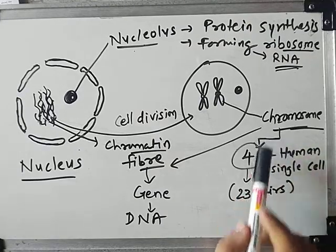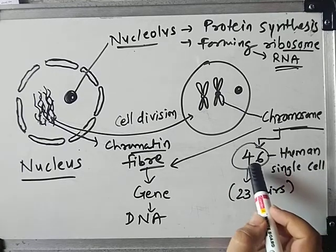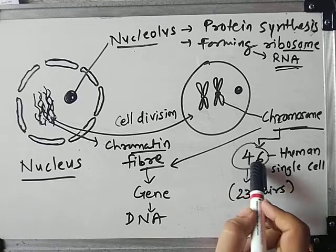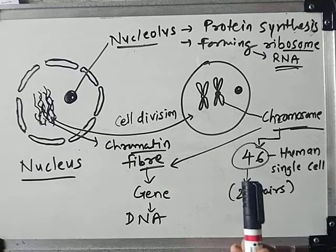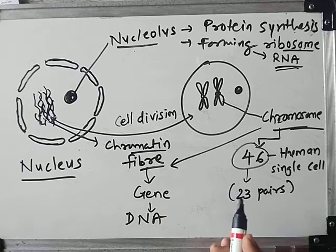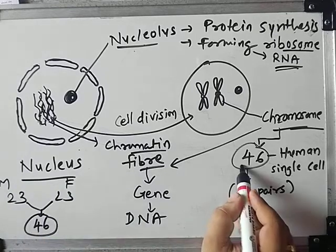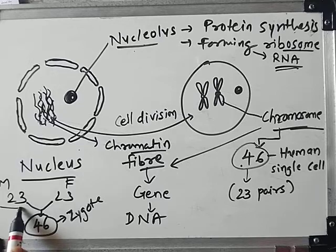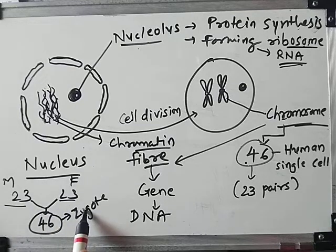In a human cell, the chromosome number is 46 per single cell — that means 23 pairs. These 23 pairs combine as follows: 23 chromosomes from the male combine with 23 chromosomes from the female to form the zygote with 46 chromosomes. So the zygote has genes from both father and mother — both characteristics are mixed in the zygote — and that is how we achieve 46 chromosomes.